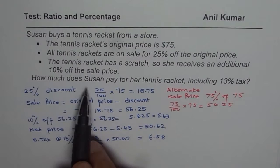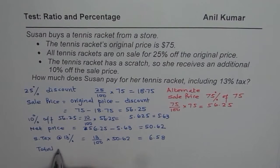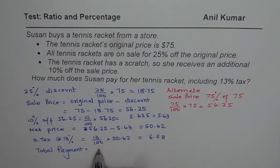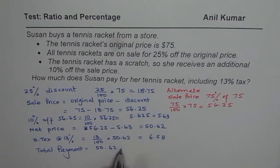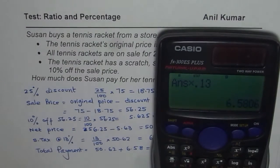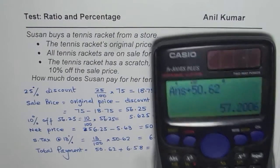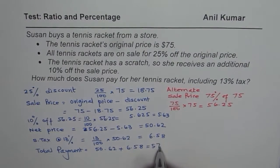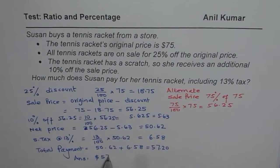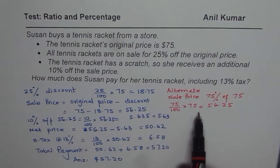So how much does Susanne pay for her tennis racket including tax? The total payment is the net price plus the tax: 50.62 plus 6.58, which equals $57.20. So our total payment — that is our answer — is $57.20.